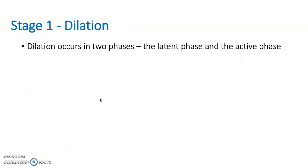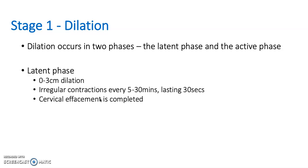Stage one is dilation, which occurs in two phases: the latent phase and the active phase. The latent phase is zero to three centimetres dilation. There are regular contractions every five to thirty minutes, lasting about thirty seconds, and cervical effacement is complete — that's where the cervix goes from being long and thin to short and fat.